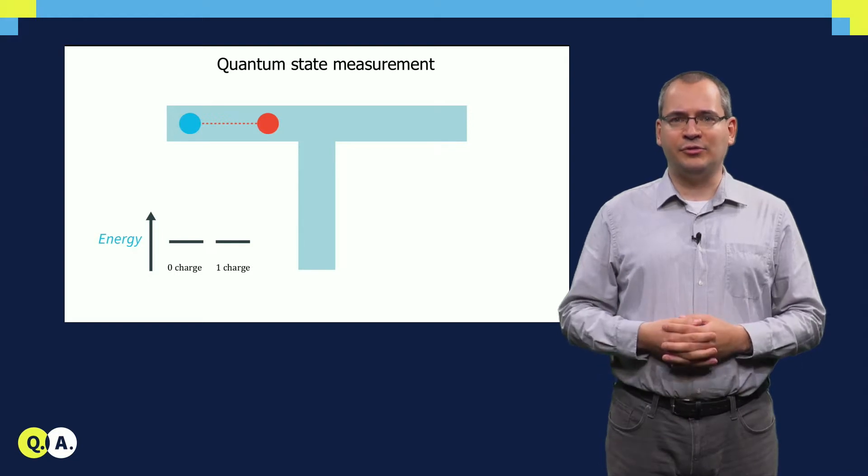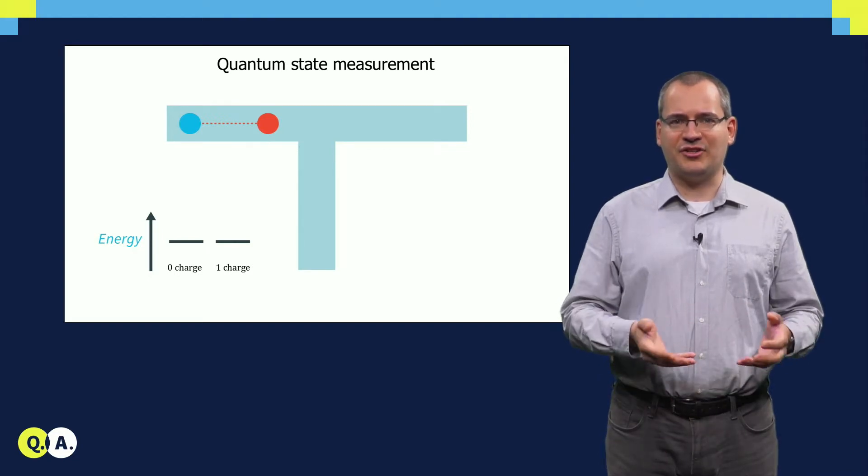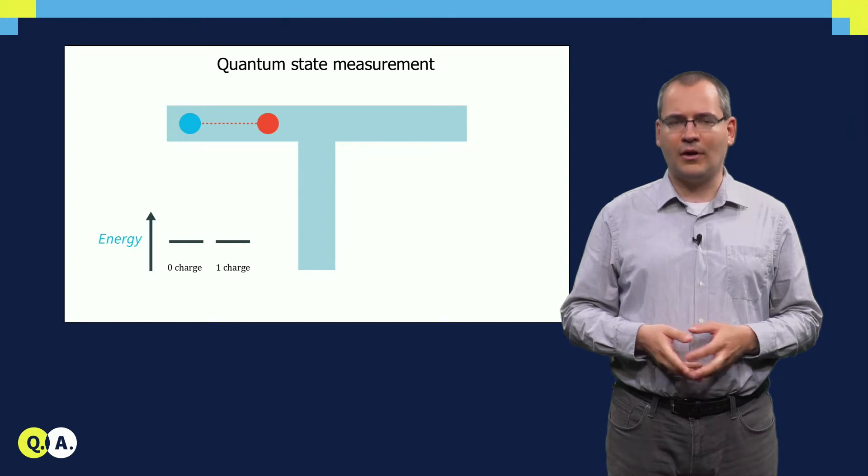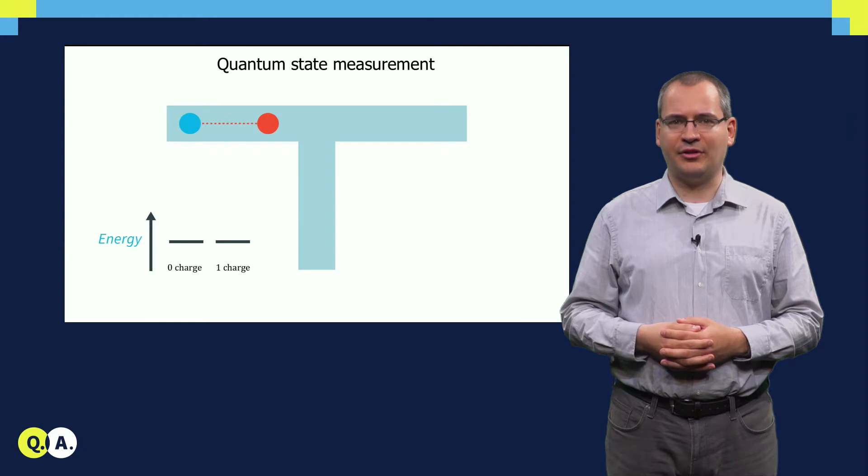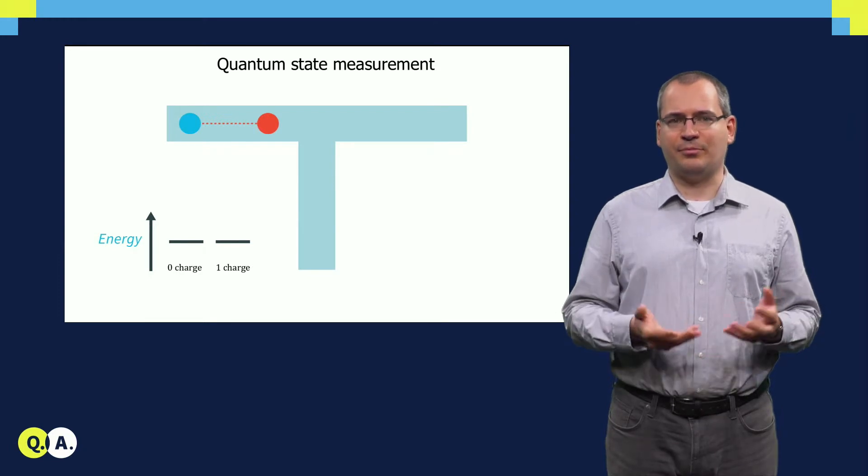Similarly, the two charge states can then be measured by charge detectors that are put close to the nanowire. This readout scheme, relying on the interaction between electrons in the nanowire, is called interaction-based operation.